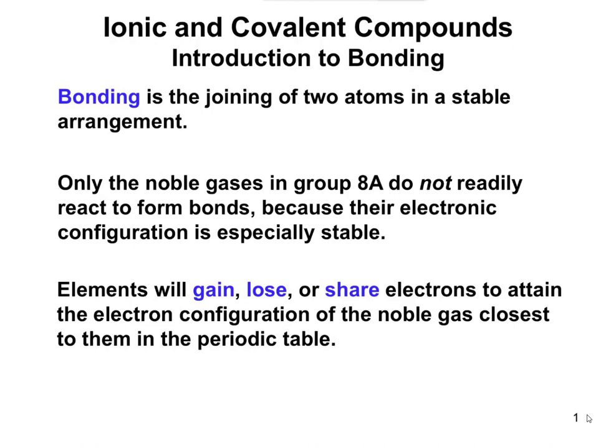In ionic compounds, electrons are going to be transferred — so an element is going to gain or lose electrons. In covalent compounds, electrons are going to be shared between the atoms. We're going to look at these in two sections: about half the material will focus on ionic bonds, and the other half will focus specifically on covalent bonds.